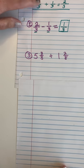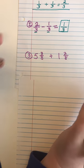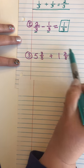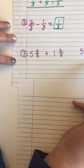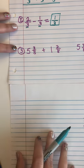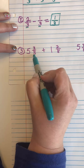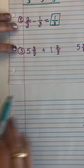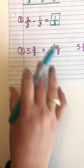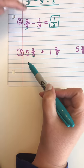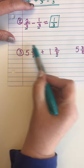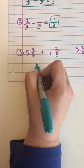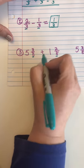Now I can move to some more examples. The difference is these are mixed numbers — this is an addition problem with mixed numbers, and this is a subtraction problem with mixed numbers. When I look at it, I notice my denominators are the same, so I have common denominators.